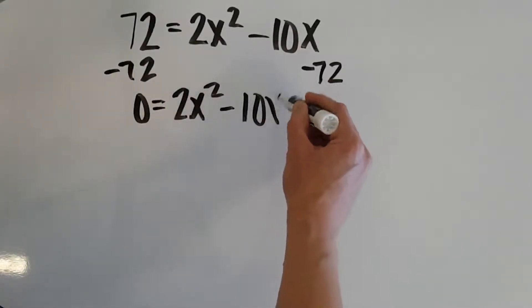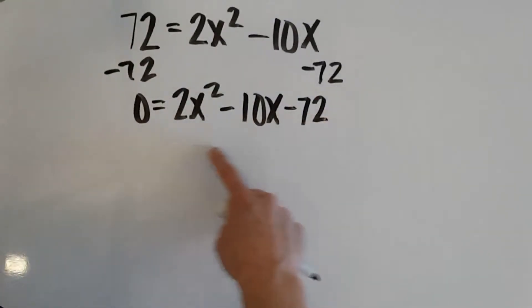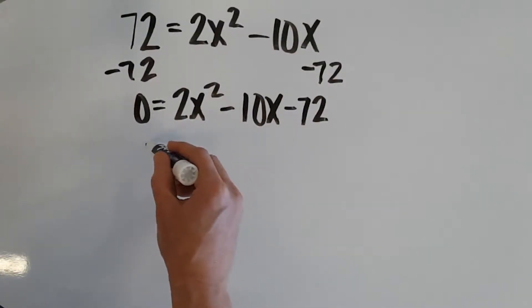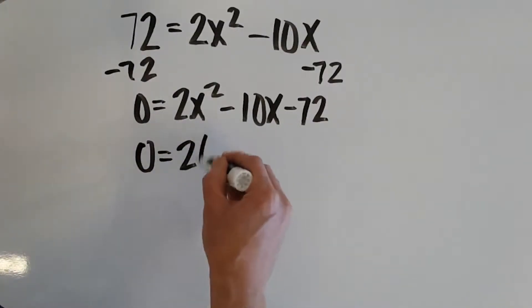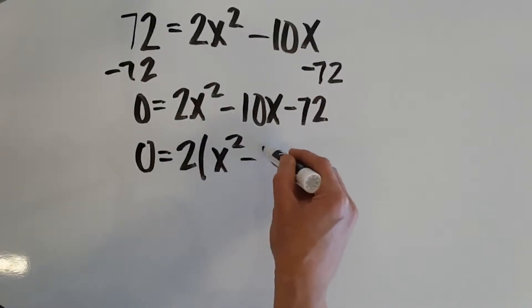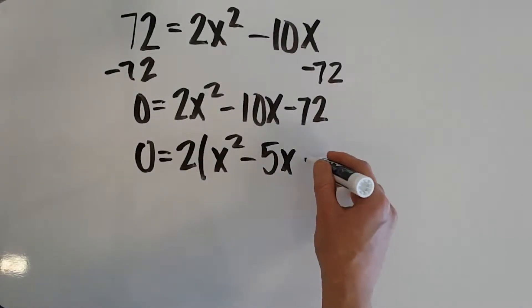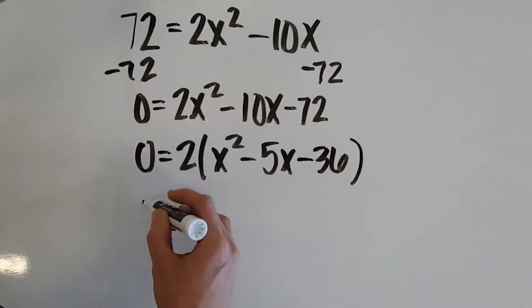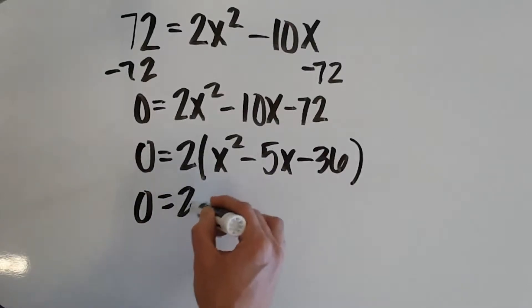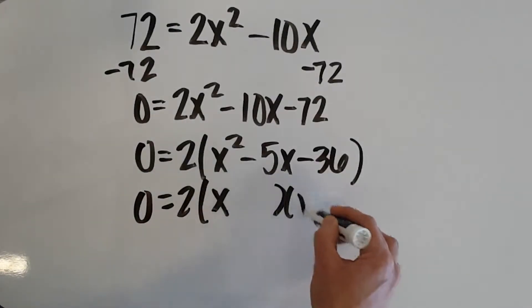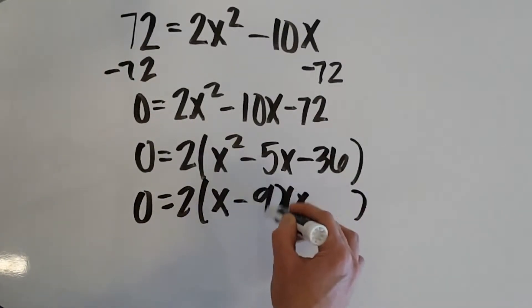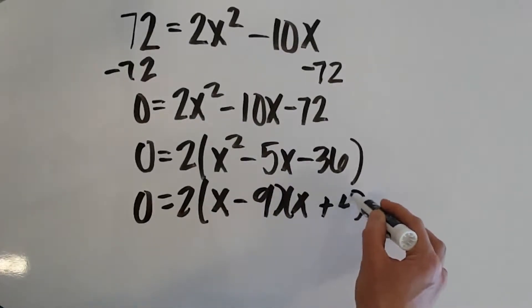And remember, we always want to put it in the right order. It always should be in standard form, ax squared plus bx plus c. So, now we're going to factor this. We always check for GCF first, which there is one. So, I'm going to factor out a 2. Well, 2, not an x squared, silly. And then, we can keep factoring this quadratic piece into our two binomials. It happens to factor into x minus 9 and x plus 4.